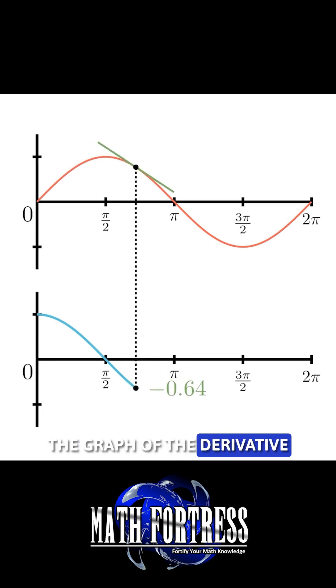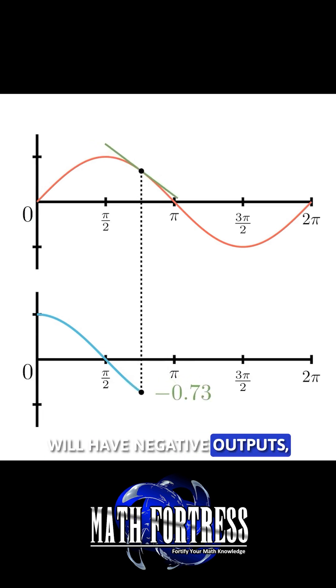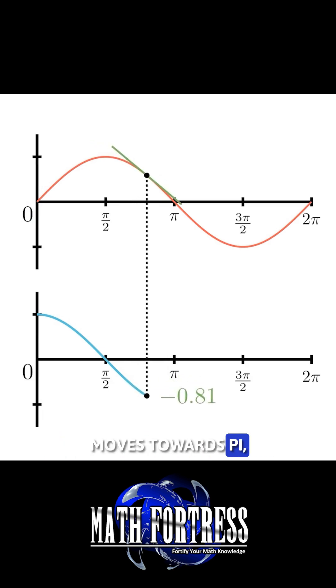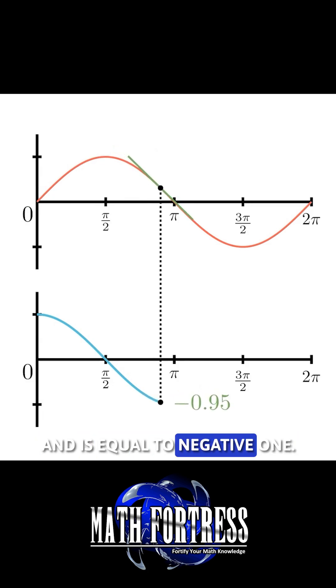The graph of the derivative will have negative outputs, and as the tangent line moves towards pi, the slope of the tangent line reaches a minimum and is equal to negative 1.